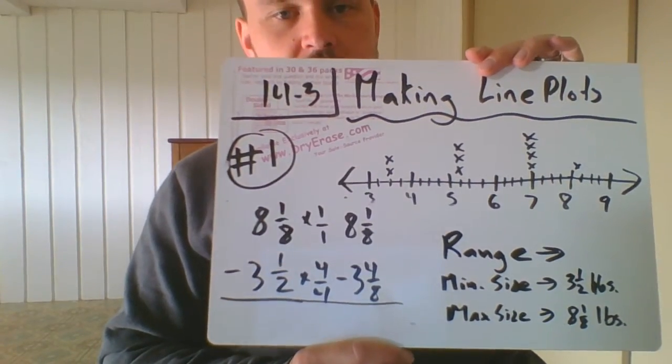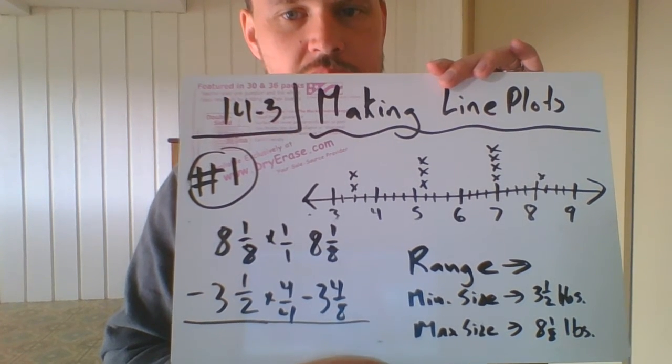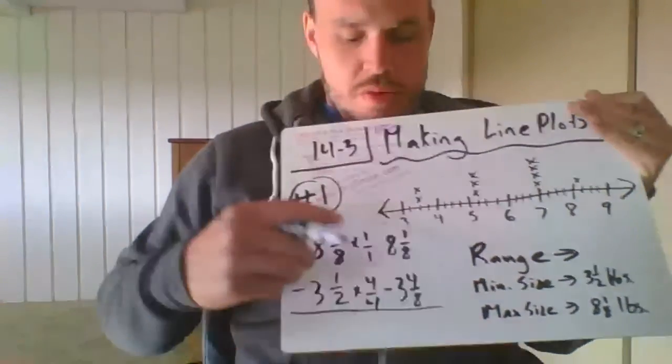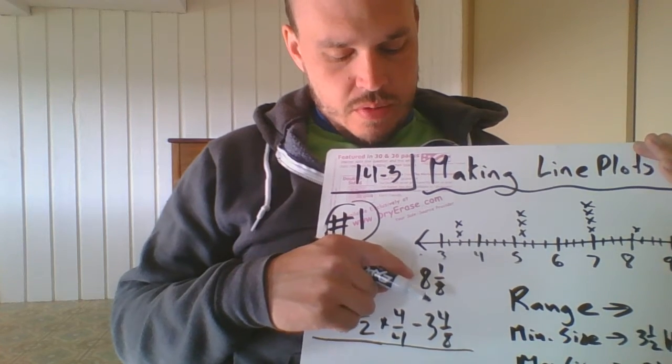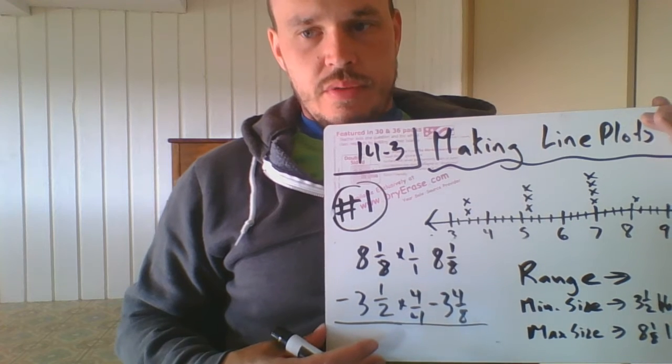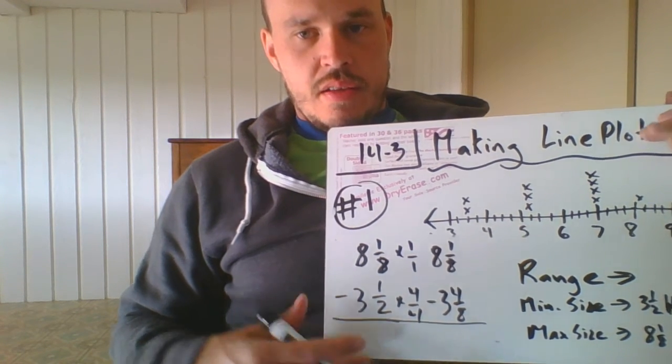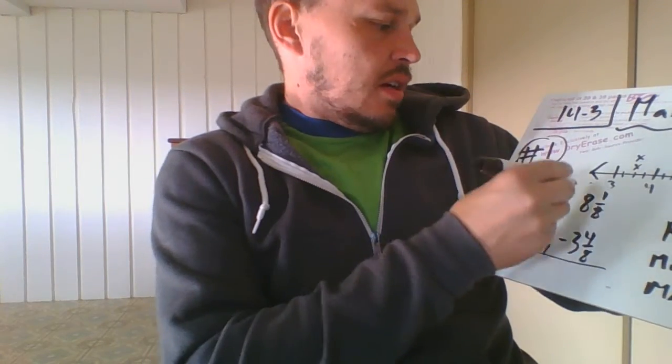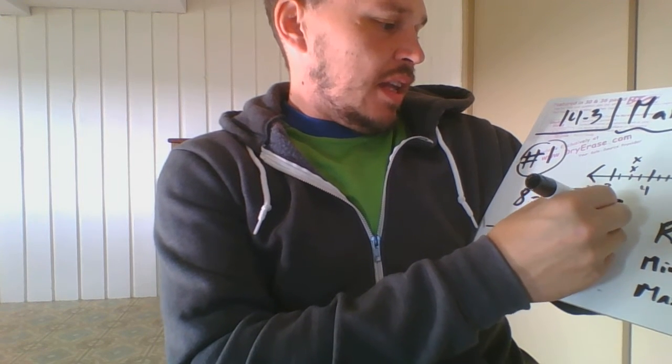So when you find the range, it's something that we haven't done for a while. You're actually going to be subtracting the smallest number from the largest number. So I went ahead and did a little bit of the review math. You have eight and an eighth minus three and a half. So then you have eight and one eighth minus three and a fourth. So then what you have to do is you have to find common, or we have a common denominator here, but you can't do one eighth minus four eighths. So you cross out the eight, make it a seven, add eight over eight like we did before.